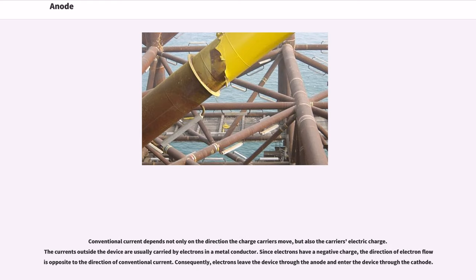Conventional current depends not only on the direction the charge carriers move, but also the carrier's electric charge. The currents outside the device are usually carried by electrons in a metal conductor. Since electrons have a negative charge, the direction of electron flow is opposite to the direction of conventional current. Consequently, electrons leave the device through the anode and enter the device through the cathode.